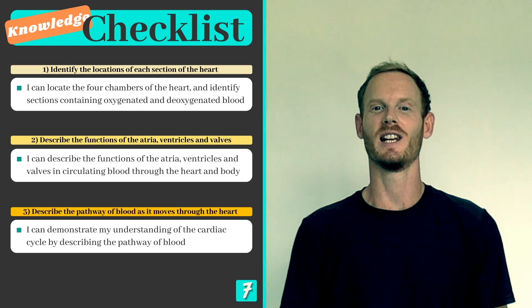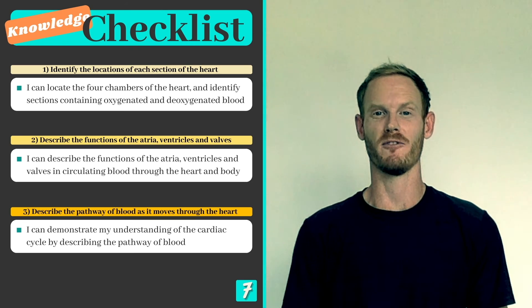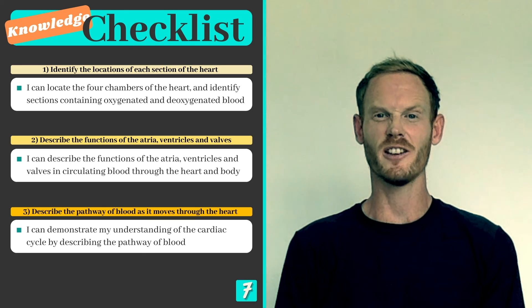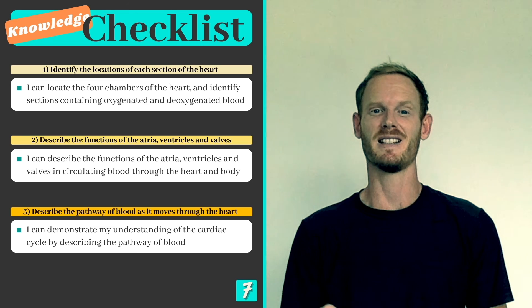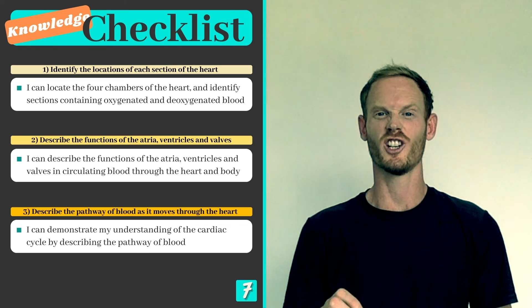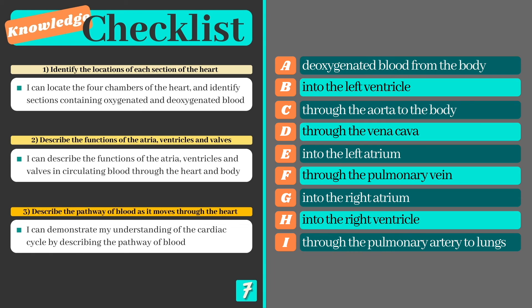You've now covered everything you need to know for topic 3.2 on the structure and function of the heart. The cardiac cycle in particular may take some time to remember, but you can come back and watch this video as many times as you need. In the meantime, here's an opportunity to test your understanding by placing the statements in the correct order — starting with the first statement in the list. The valves have been left out to simplify things, but feel free to add those into the sequence if you can.